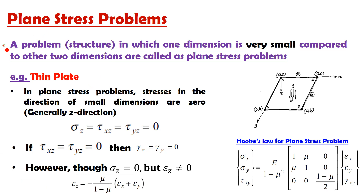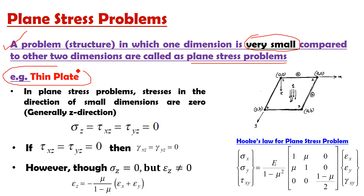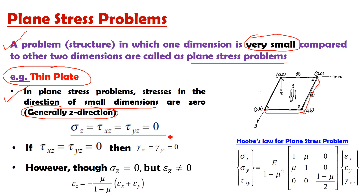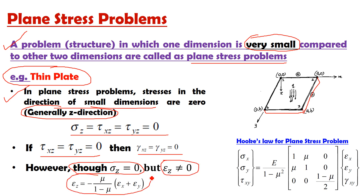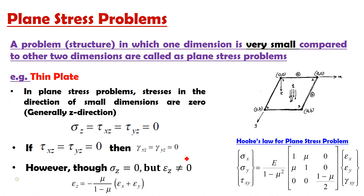To summarize the four points for plane stress: First, definition — a problem in which one dimension is very small compared to other two dimensions is called a plane stress problem; the best example is a thin plate where thickness is very small compared to length and width. Second, stresses in the direction of the small dimension (normally z) are zero: σz = τxz = τyz = 0. Third, if τxz and τyz are zero, then shear strains γxz and γyz are also zero. Fourth, though σz = 0, εz is not equal to zero.